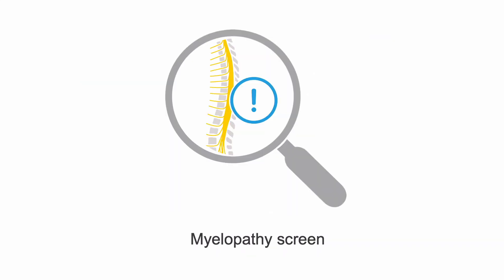Always evaluate for myelopathy. Look for hyperreflexia, clonus, increased muscle tone, a sensory level on the trunk, gait disturbance, loss of proprioception, loss of balance, a positive Romberg, and more.